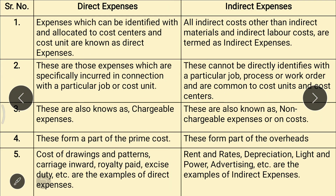Now we will see the difference between direct expenses and indirect expenses. First point: expenses which can be identified with and allocated to cost centers and cost units are known as direct expenses. In contrast, all indirect costs other than indirect materials and indirect labor cost are termed as indirect expenses.